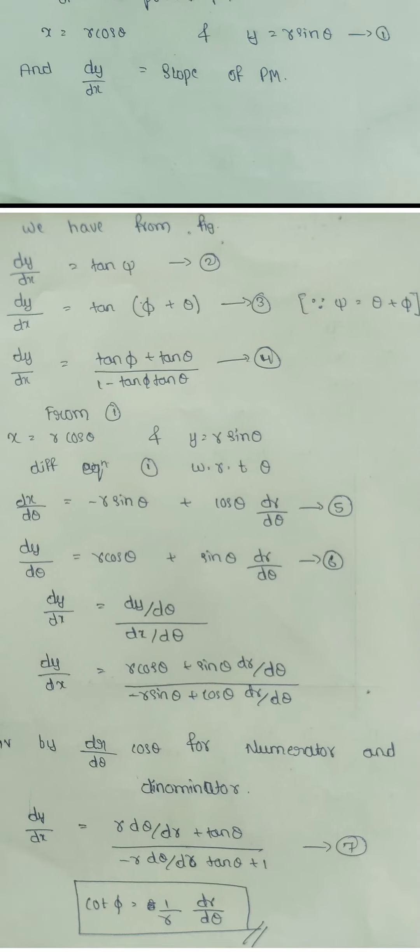dy by d theta equals r cos theta plus sin theta times dr by d theta. Take it as equation 6.